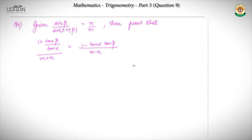So we have question 9 here. Given that sin β divided by sin(2α + β) is equal to n/m, then prove that 1 plus tan β by tan α, whole divided by m plus n, is equal to 1 minus tan α times tan β, divided by m minus n. In this question, the given portion is sin β upon sin(2α + β) equals n/m, and what we have to prove involves m plus n upon m minus n.